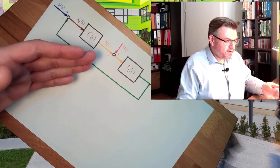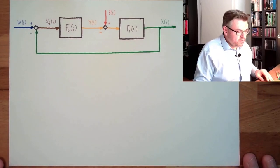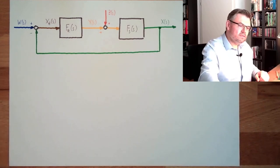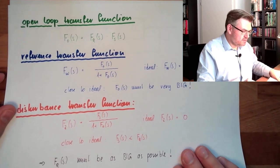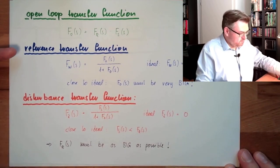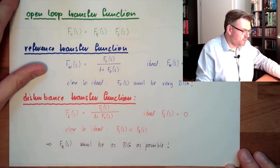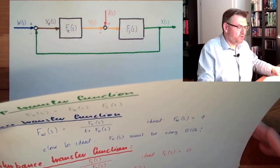Hello and welcome to a new video about contour engineering. Last time we did an analysis of the contour loop — I have drawn it in here again. We said there is a regulator transfer function and a system transfer function. We analyzed this and had several transfer functions: a reference transfer function and a disturbance transfer function, describing how reference and disturbance values are transferred to the output.